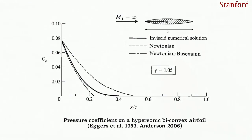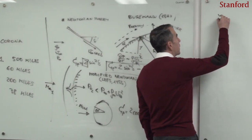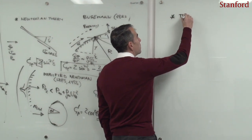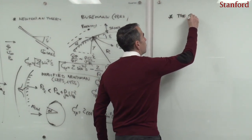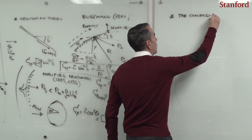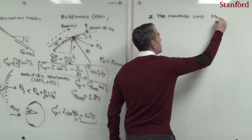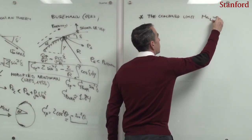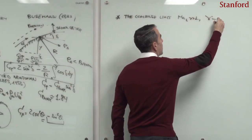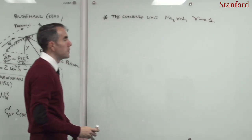This brings us to the key question: what is special about the combined limit of large Mach numbers and γ tending to 1? Why should we care about this limit?